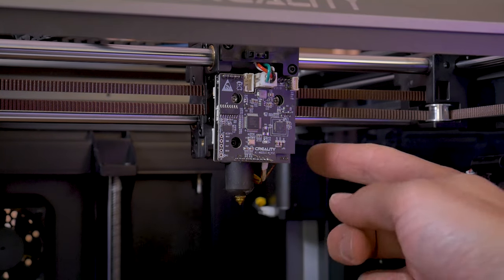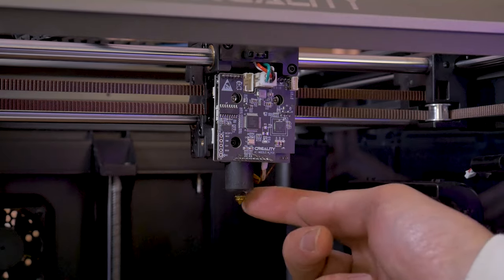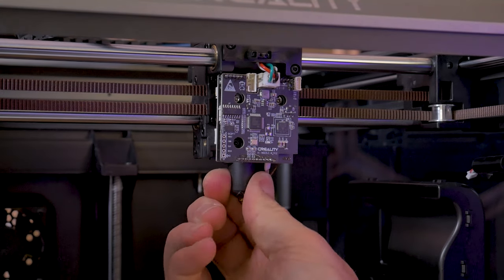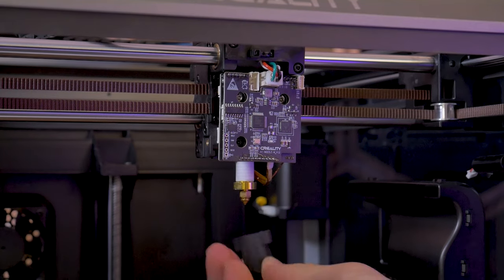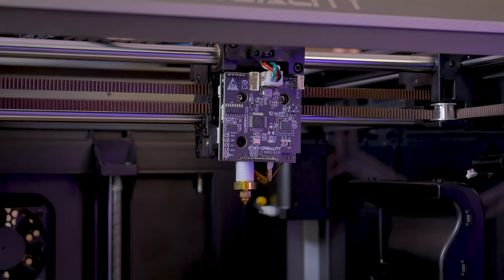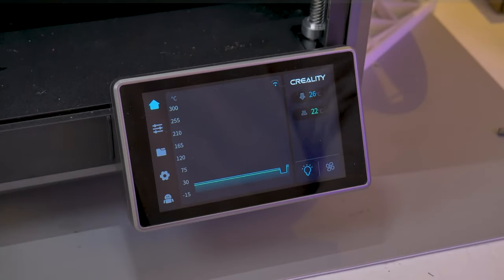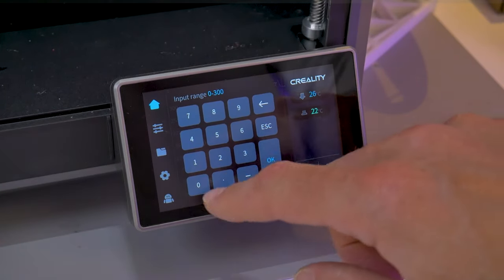Now you can reassemble everything at this point, but since we have the front cover off, I'm also going to show you how to replace the nozzle. I'm going to be replacing my brass nozzle with a hardened steel nozzle from my website embracemaking.com. With the nozzle at room temperature, you'll pull off the silicone boot. Be sure not to damage any of the thermistor or heater band wires.